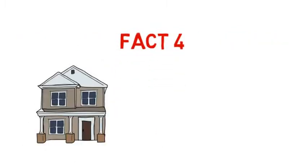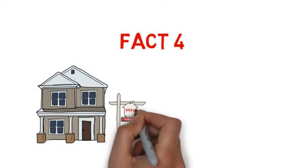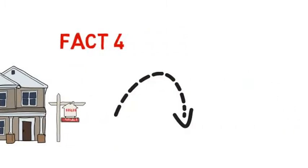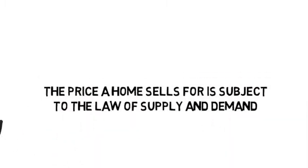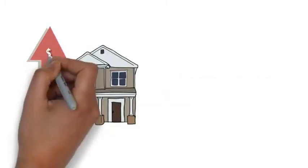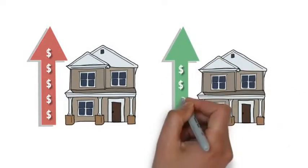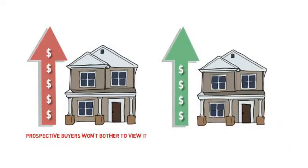Listing a home for an unrealistically high price almost always results in an unrealistically low selling price. The price a home sells for is subject to the law of supply and demand. When a home is priced too high versus comparable homes in the area, prospective buyers won't bother to view it.